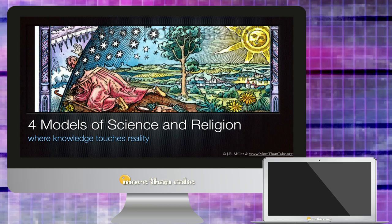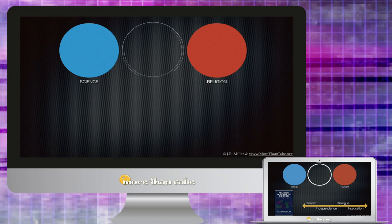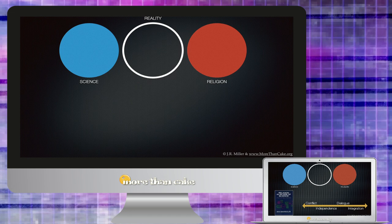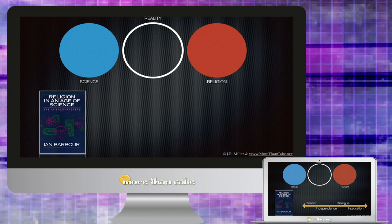So let's begin with a simple observation that there is an objective reality. Let's also begin with the claim that we can know something about that reality, but what role do science and theology play in leading us to that knowledge? Ian Barbour's groundbreaking book Religion in the Age of Science offers us four approaches or models that illustrate how different people seek to answer that question.